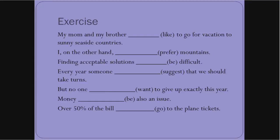So now let's look at the exercise. My mom and my brother like to go for vacation to sunny seaside countries. The verb needs to be in plural because we have two subjects together, coordinated subjects. My mom and my brother, two people, require a plural verb.